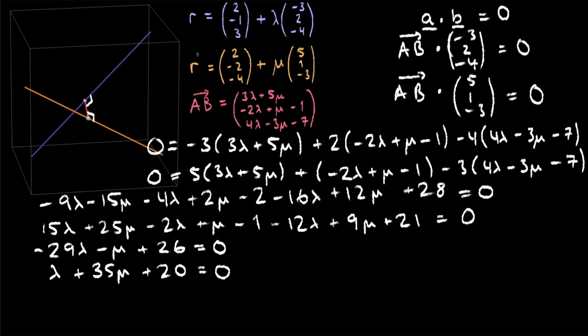You can either solve these by hand or put these into your calculator, and you should get lambda equals 155 over 169, and mu equals minus 101 over 169.